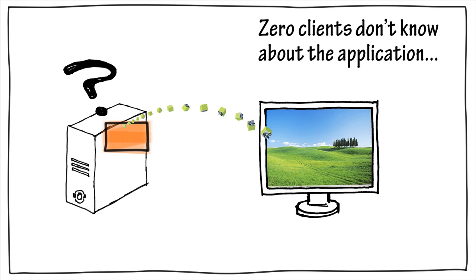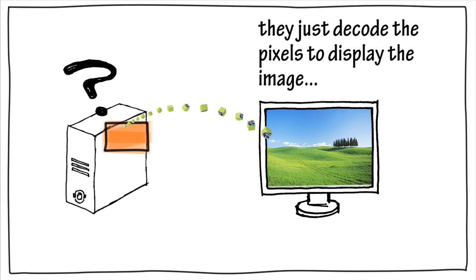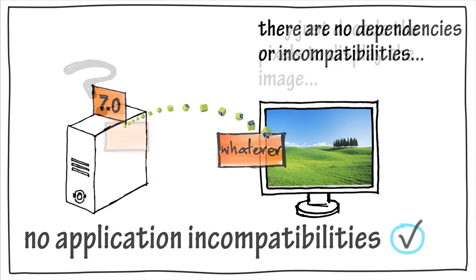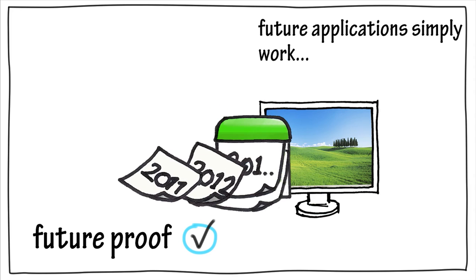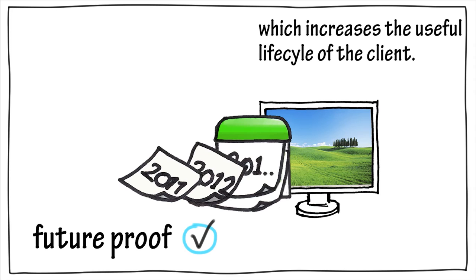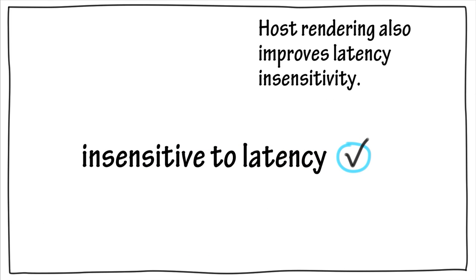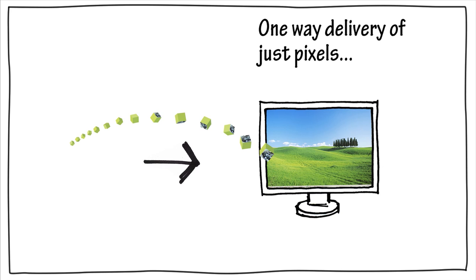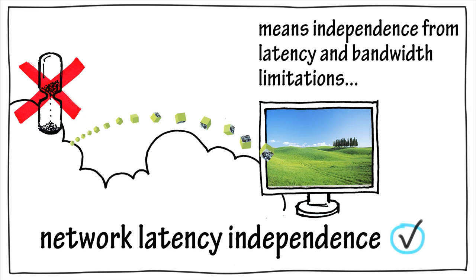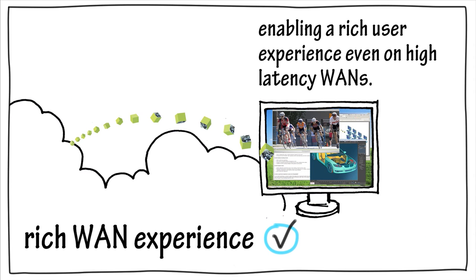Because the client doesn't know anything about the application, it just has to decode the pixels to display the image. There are no application dependencies or incompatibilities between the host and the client, and future applications will simply work, which increases the useful lifecycle of the client. Host rendering is also insensitive to latency. With the PCoIP protocol, the one-way delivery of only pixels to the Zero client provides complete independence from network latency and bandwidth limitations, and enables a rich user experience even on high-latency, wide-area networks.